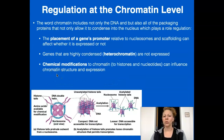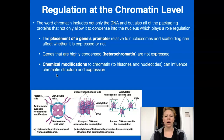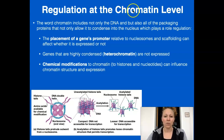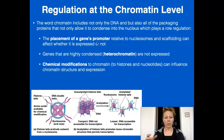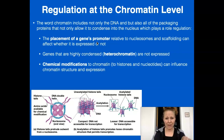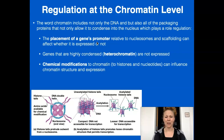The word chromatin includes not only DNA, but also all of the packaging, which is a major part of expression at the chromatin level. One factor is the placement of a gene's promoter site — where that promoter region is on the DNA affects where RNA polymerase can attach and transcribe. If it is next to a nucleosome or scaffolding, it may have less access and may not be expressed as often, because it's being blocked.